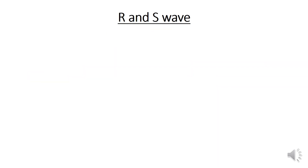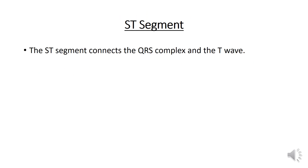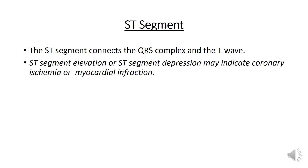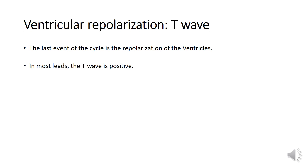Let us discuss about the R and S waves. The R and S waves indicate the spread of the action potential along the ventricular myocardium itself. The ST segment connects the QRS complex and the T wave. ST segment elevation or ST segment depression may indicate coronary ischemia or myocardial infarction. The last event of the cycle is the repolarization of the ventricles, known as the T wave. In most leads, the T wave is positive.